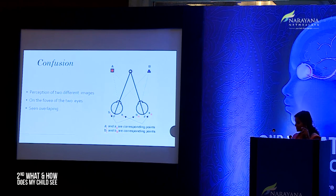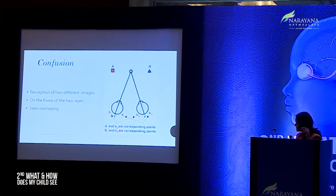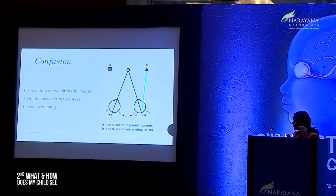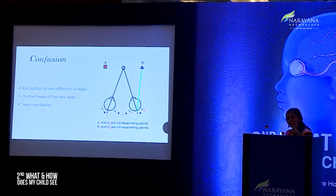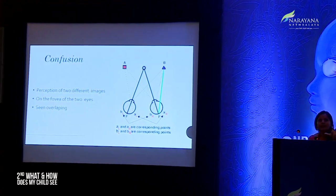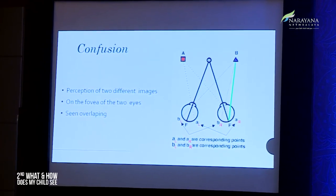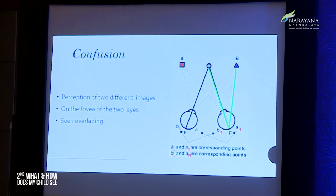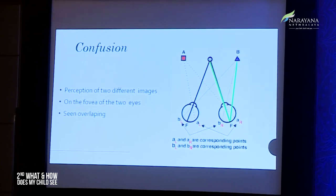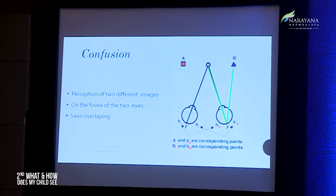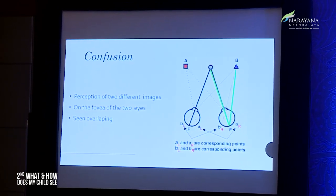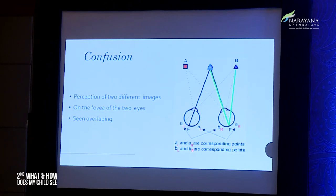In confusion, the left fovea is looking at one target and the right fovea is looking at another target. Confusion is very rare clinically; it is usually diplopia that people complain of. Since the two foveas are corresponding retinal points and should be fused as one image, when one fovea sees a circle and the other sees a triangle, the brain attempts to fuse both, which becomes confusing for the individual.